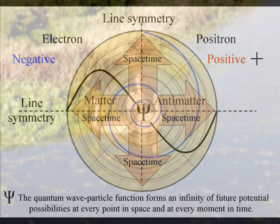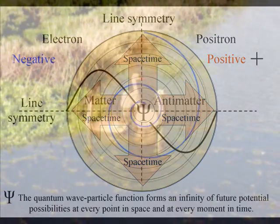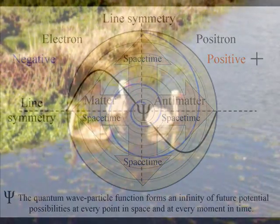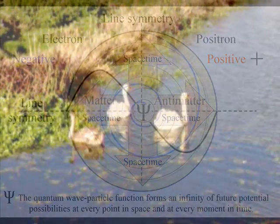It is because life can choose when and where to collapse the quantum wave-particle function or probability function breaking the symmetry that we have free will.